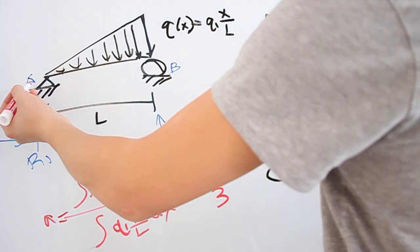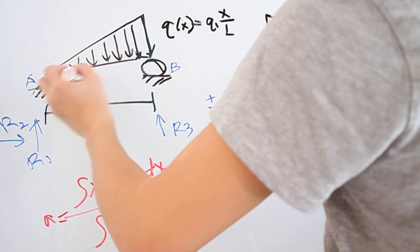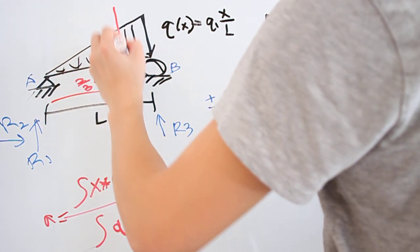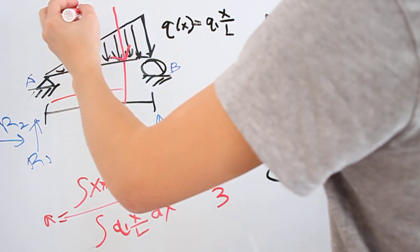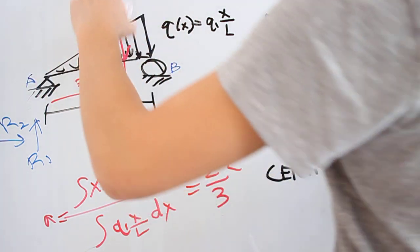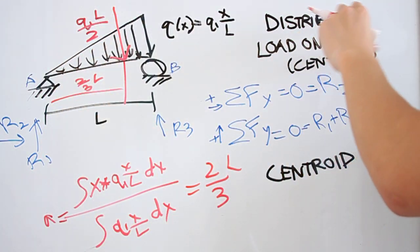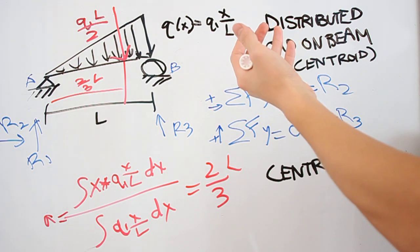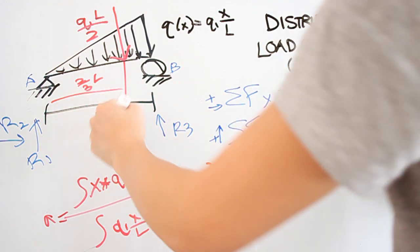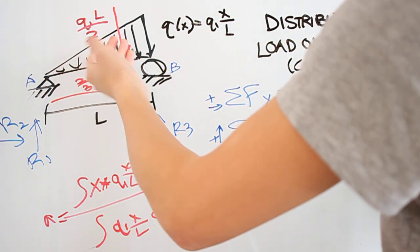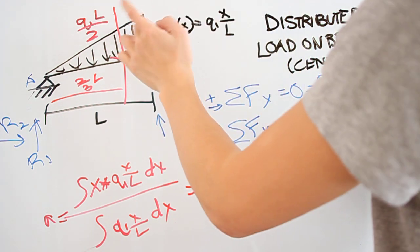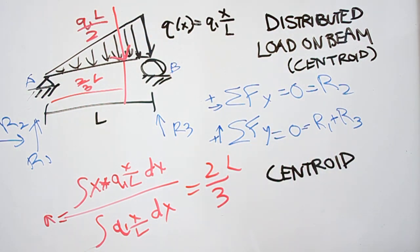What does two-thirds L mean? Measuring from point A in the positive direction, the concentrated force of q1L over 2 acts at two-thirds L. So we've turned this triangular load into a single concentrated force. That makes intuitive sense for a triangle — the centroid is a little farther to the right than the midpoint because the bigger loads are on that side.